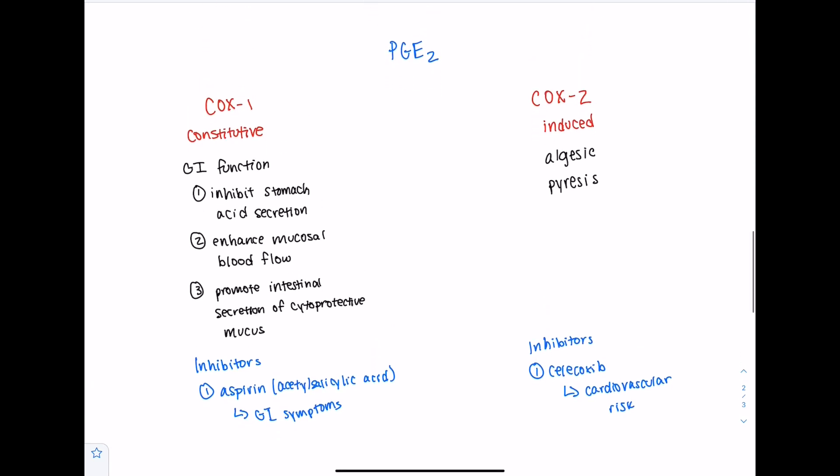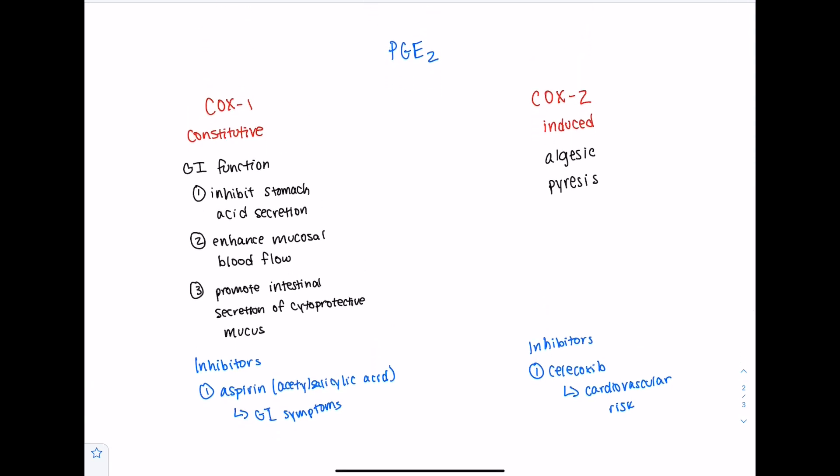So maybe looking at this, breaking down PGE2's functions as an algesic, pyresis, and GI protectant kind of hopefully helps conceptualize what PGE2 does, and how whether it's made from COX1 or COX2 can play a role in determining what its function is. And just really quickly, before we end this, I want to discuss, because I didn't really talk about it before, what cells are going to be basically expressing COX1 and COX2.